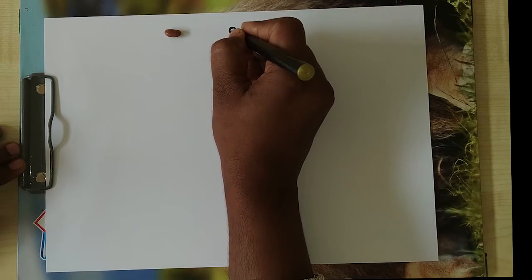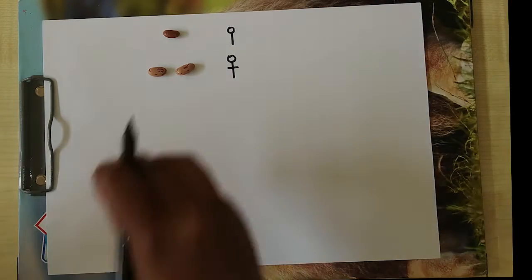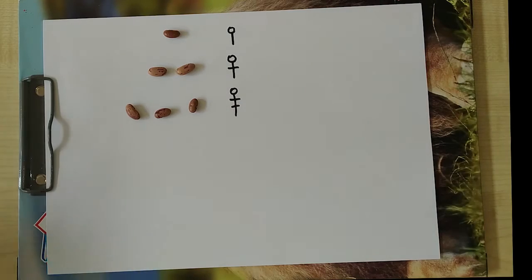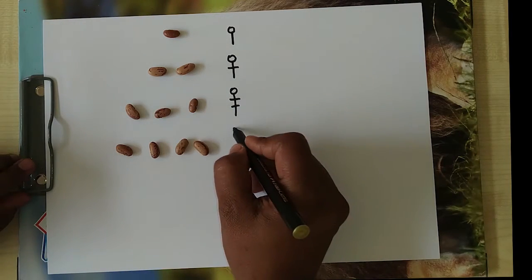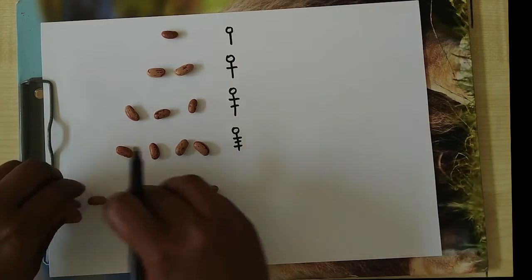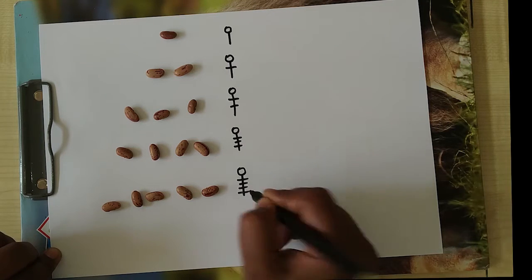So, now let us look at another way of representing numbers. Suppose for each number, we put different symbols. Suppose we use this kind of symbol, one symbol for one, one symbol for two. Suppose we use this kind of a mechanism. The problem with that is, as we get larger and larger numbers, we will have more and more symbols and it is difficult to remember so many symbols. So, this method also becomes clumsy very soon.